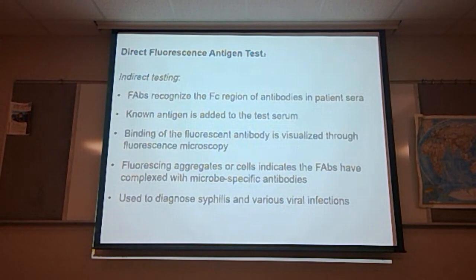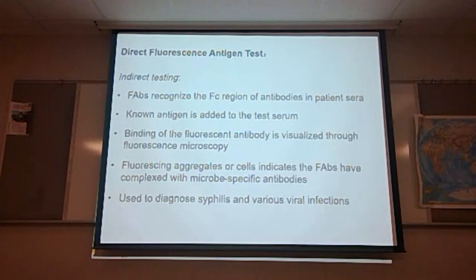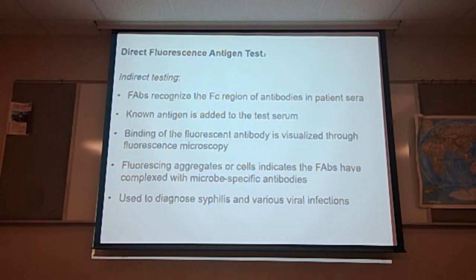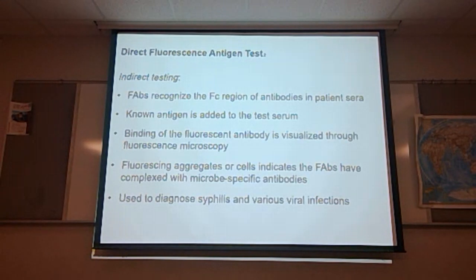In indirect testing, the FABs can recognize the constant region of an antibody in the patient's sera. The known antigen is added to a test serum, and the binding of the fluorescent antibody is visualized through fluorescence microscopy. The aggregates or cells indicate which fluorescent antibodies have complexed with microbe-specific antibodies. We use this to diagnose syphilis and various viral infections.